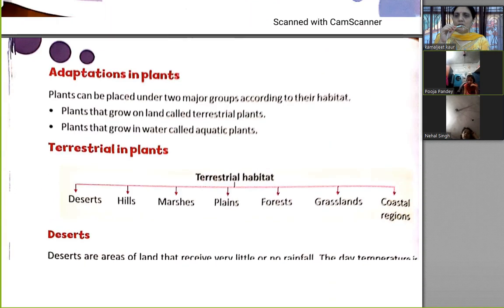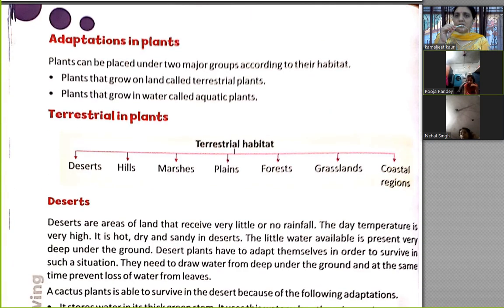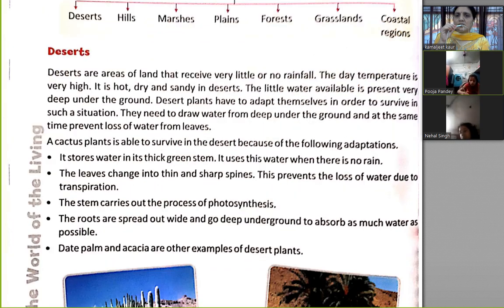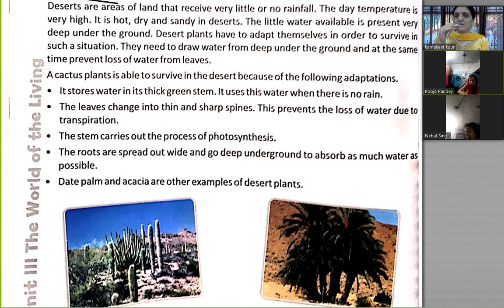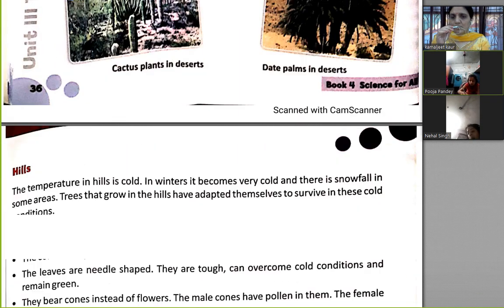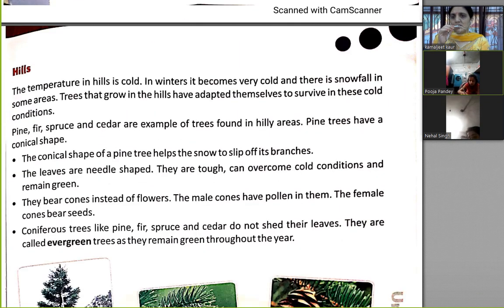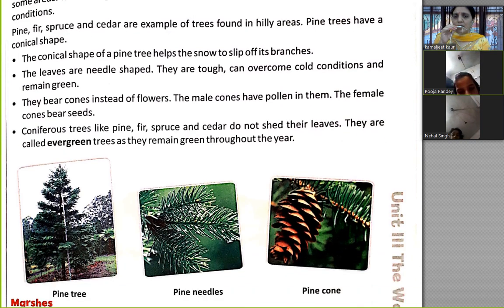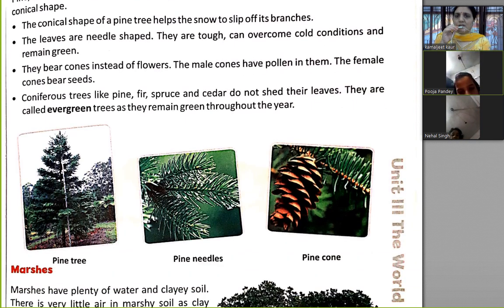We read about adaptation in plants. Traditional plants — in desert areas there is very less water compared to hills. In very cold climates, plants that survive are called evergreen trees.